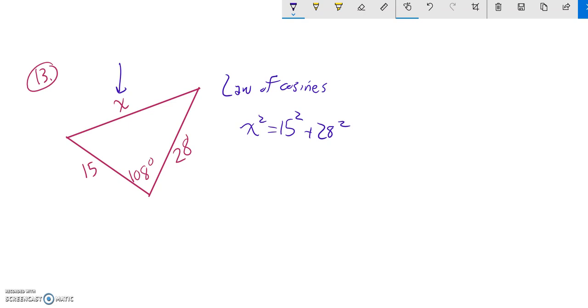But then we know it's going to be a little off since it's not a right triangle. Then we have this little corrector thing, which is minus two times one of the sides times the other side, and here's where the cosine part comes in, times the cosine of the angle between them.